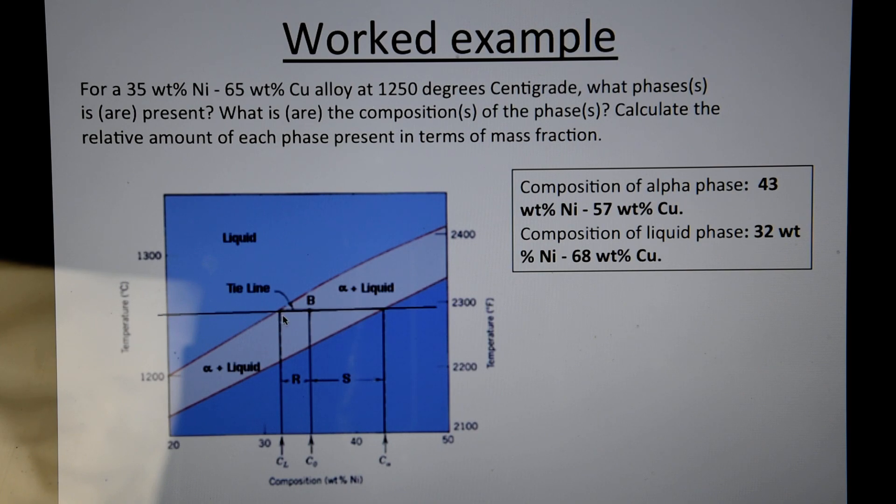Now from there, you project down. So whatever point you've got here, just project it down and that gives you the composition of the liquid. And the intersection here, if you project it down to the horizontal axis, it gives you composition of alpha. You have your original composition here, which was given as 35 weight percent of nickel.